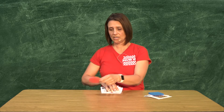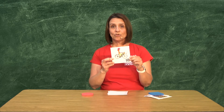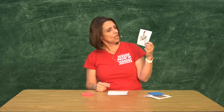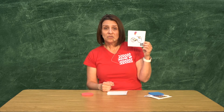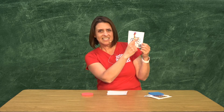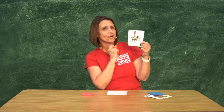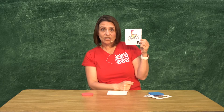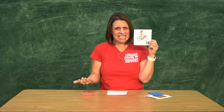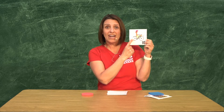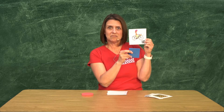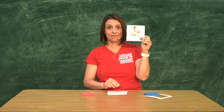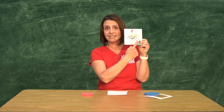Les voy a enseñar unas fotos. Aquí tenemos una bicicleta. ¿Cuántos de ustedes tienen una bicicleta en la casa? Mirando esta foto, yo miro dos círculos. Aquí están los dos círculos. La línea continúa y no tiene esquinas. ¿Qué les parece a ustedes si el círculo o la llanta tuviera esquinas? ¿Pudiera andar la bicicleta? No. Tenemos una bicicleta con las ruedas que son círculo.